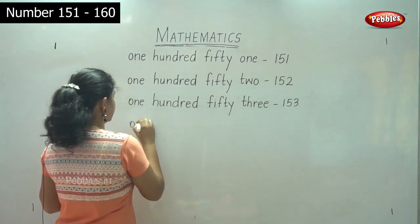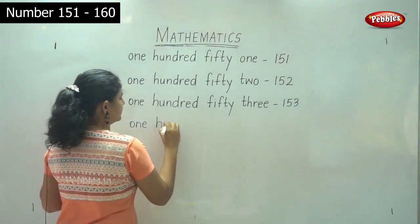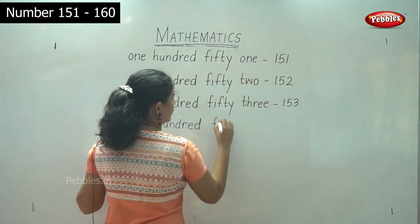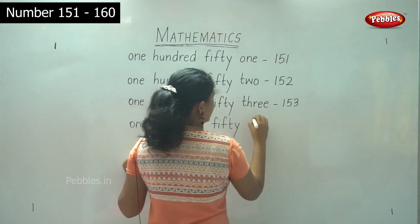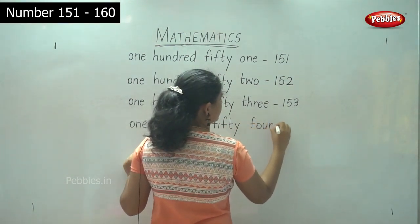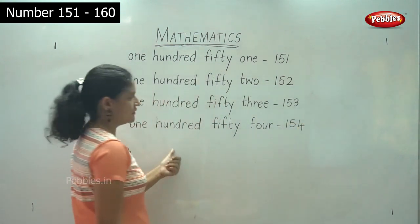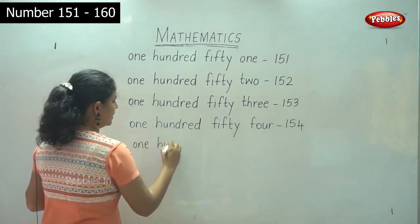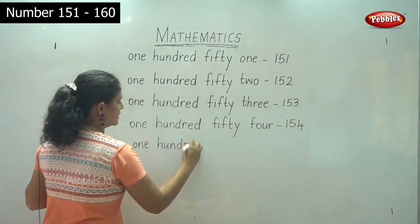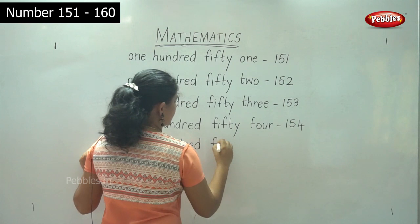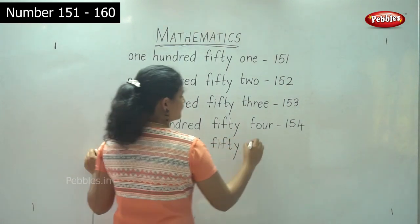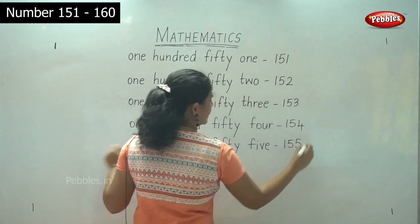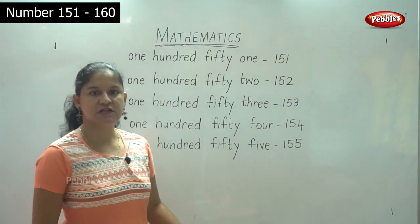154 is spelled O-N-E H-U-N-D-R-E-D F-I-F-T-Y F-O-U-R. 155 is spelled O-N-E H-U-N-D-R-E-D F-I-F-T-Y F-I-V-E. So shall we do it once more?